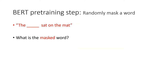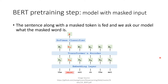In pre-training for BERT, we randomly mask a word and then ask the question: what is our masked word? The sentence along with a masked token is fed into our model. As you can see in the picture, the word 'cat' has been masked. We use a softmax classifier to classify the vector to a class.